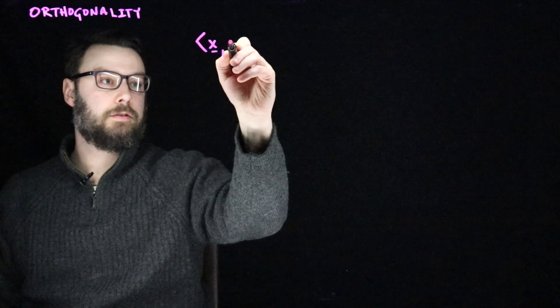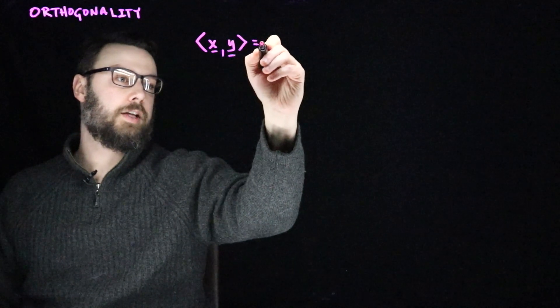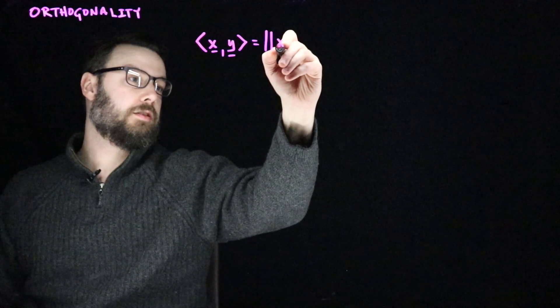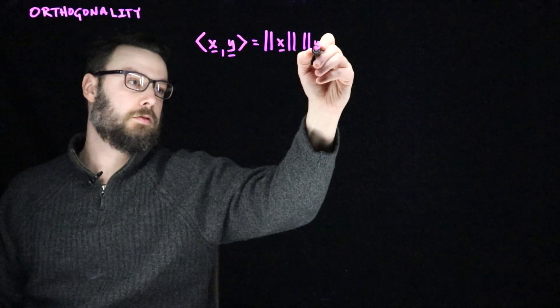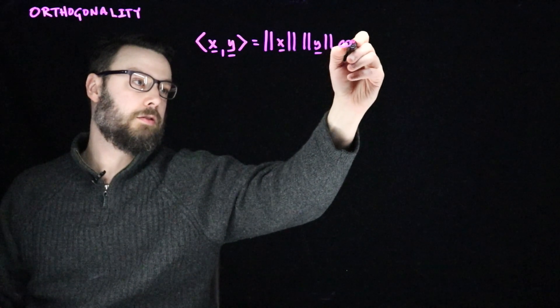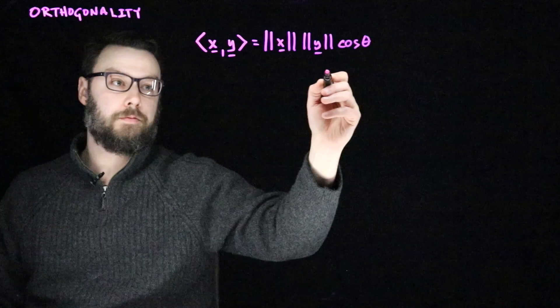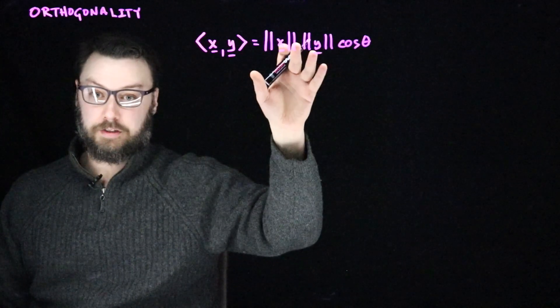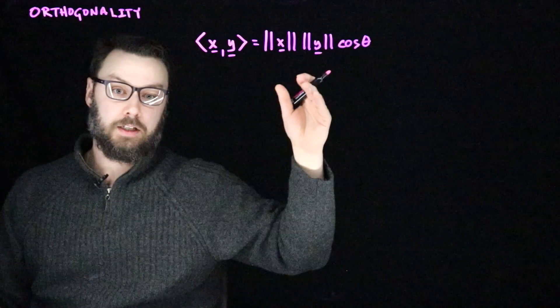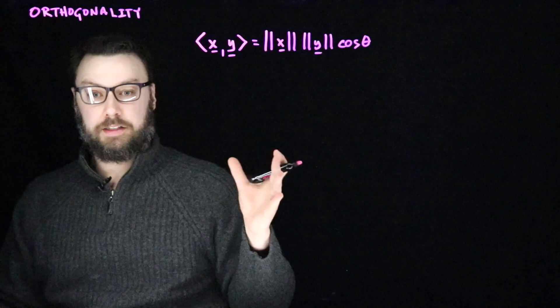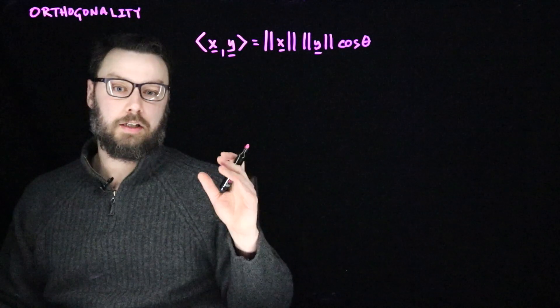This corresponds to the inner product being zero. You can convince yourself of this by thinking about the fact that if I have vectors x and y and I consider their inner product, that equals the magnitude of x multiplied by the length of y multiplied by the cosine of theta. If the dot product is zero and the lengths of the vectors are not zero, then cosine theta must be 90 degrees or negative 90 degrees. So we say that x and y are orthogonal if their inner product is zero.